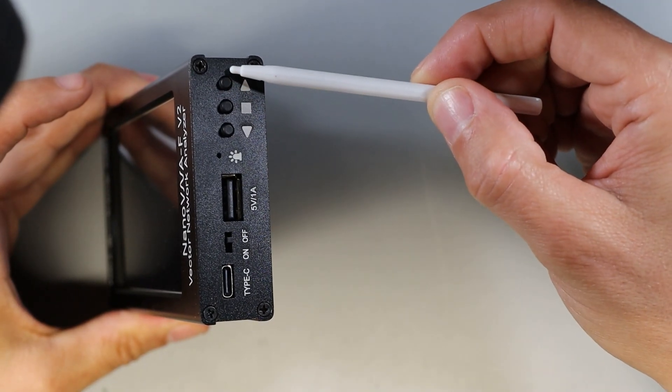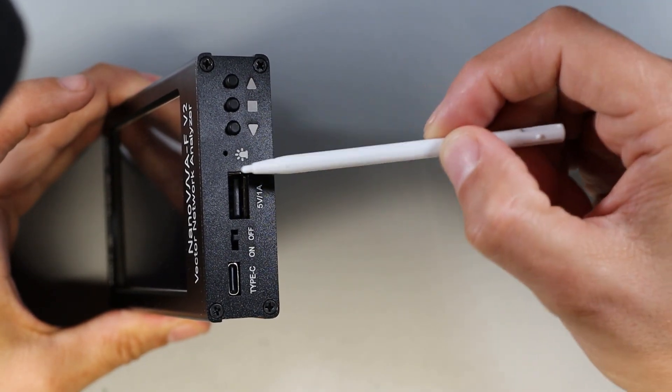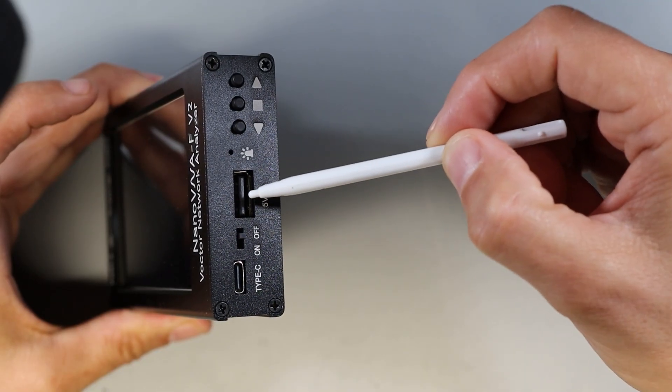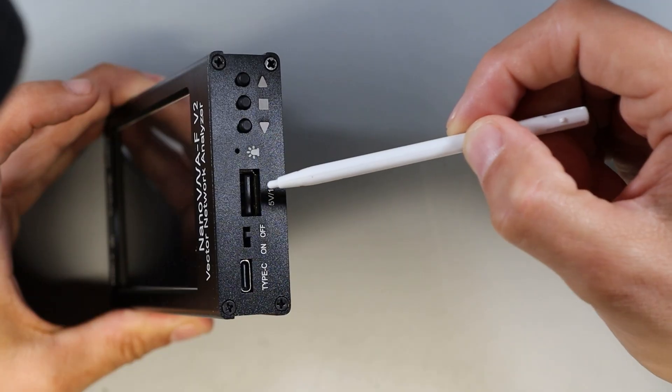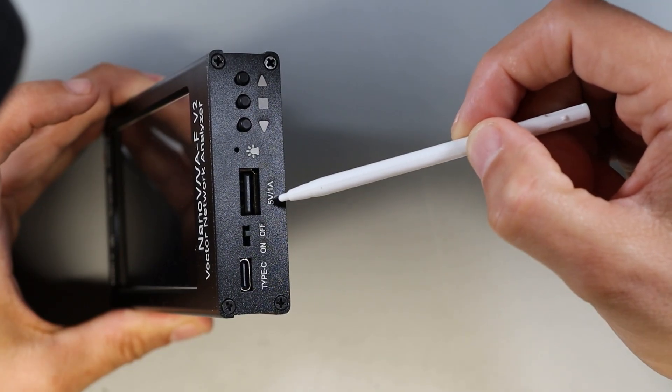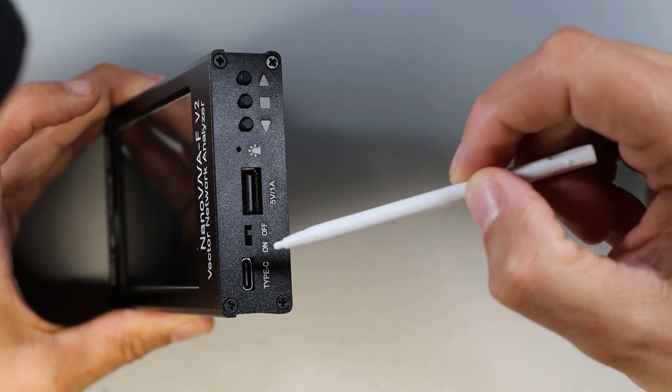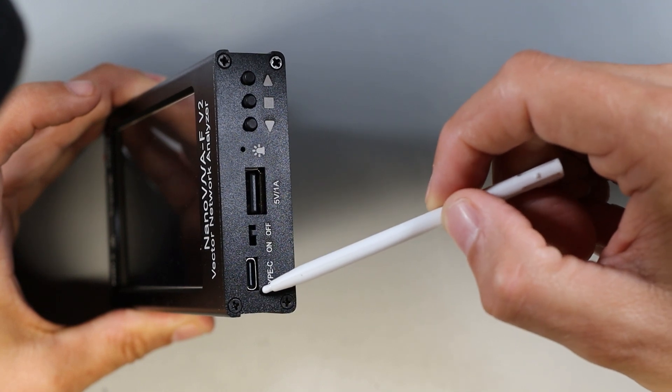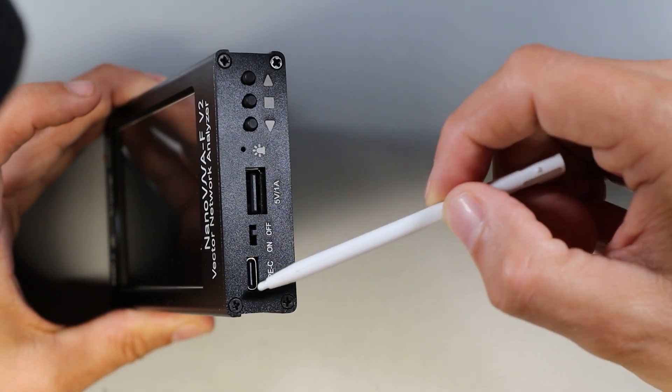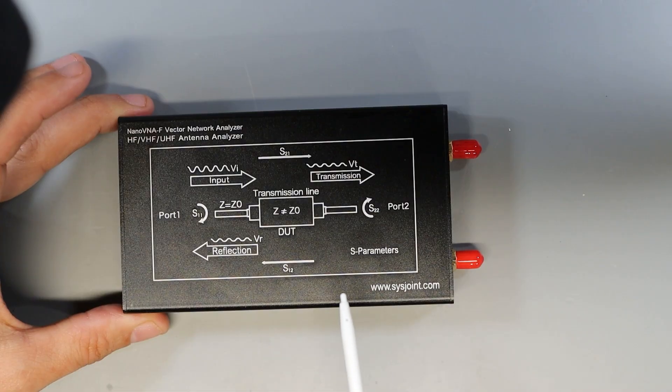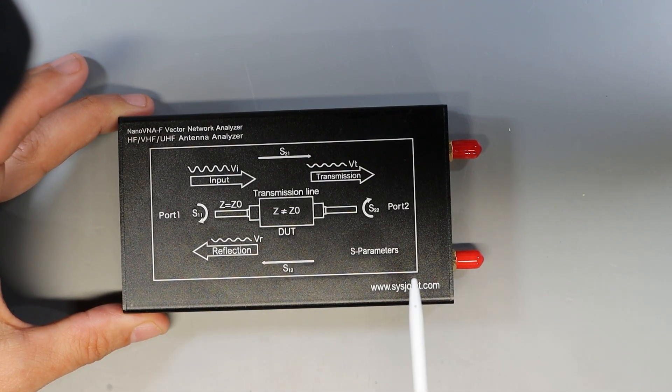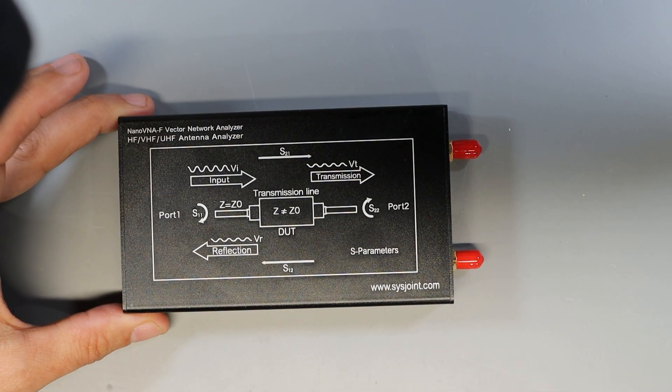On the right side of the NanoVNA we have the navigation buttons here. We have the status LED here. We have a USB-A port here - you can actually use this to power another device if you need to up to one amp. Over here is the off switch and over here is the USB-C charging port and this is also the port you would use to interface to a computer. On the back we've got a silkscreened block diagram to kind of help you remember how to use this thing, but really I suggest going to the website and checking out the full manual.